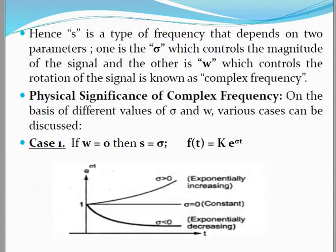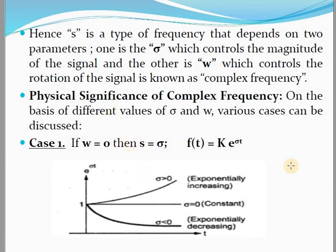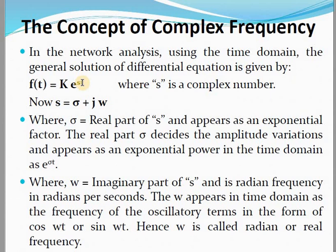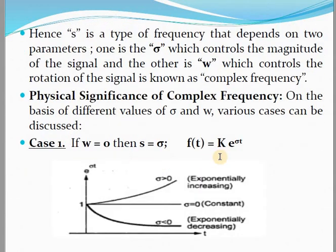Since s is a type of frequency that depends on two parameters — σ, which controls the magnitude part of the signal, and ω, which controls the rotation of the signal — it is known as the complex frequency. Now let me discuss the physical significance of complex frequency, which depends upon the values of σ and jω. Let us consider Case 1: when ω = 0, F(t) = k·e^(σt).